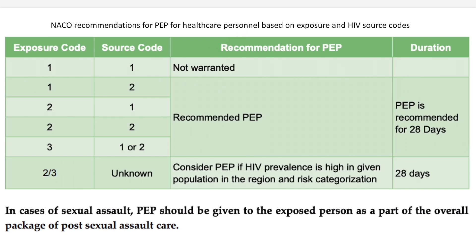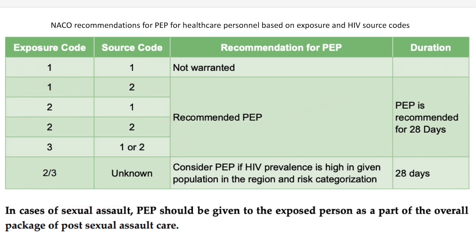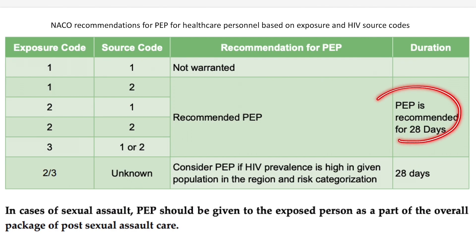Based on exposure code and source code, let us decide whether to give PEP. Per NACO recommendations: Exposure Code 1 and Source Code 1 — no need for PEP. If you remember this, all remaining combinations either recommend giving PEP, or if the HIV status of the source is unknown, consider PEP if HIV prevalence is high in the community. These NACO guidelines are oriented toward rural or underdeveloped parts of the nation.